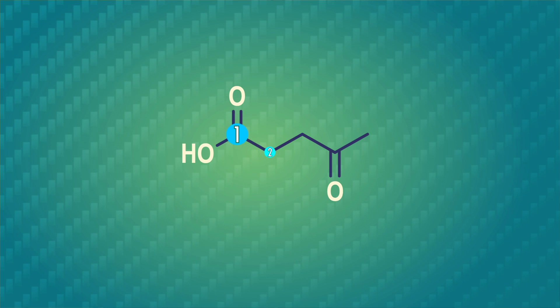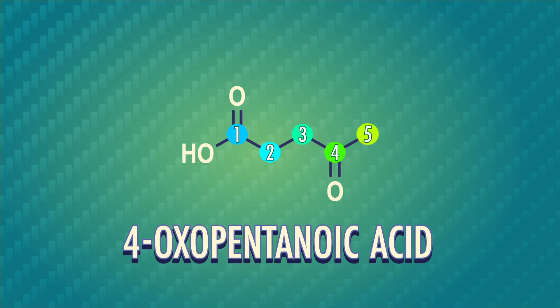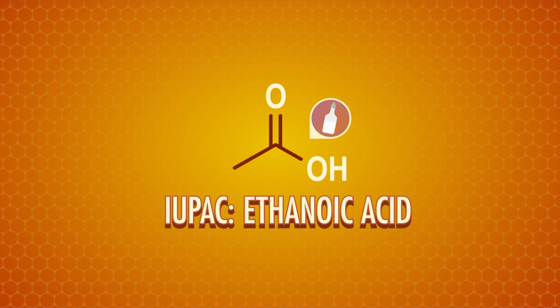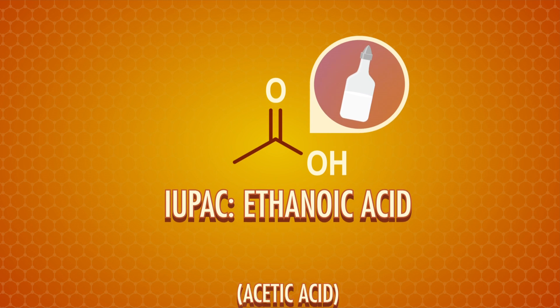When it comes to naming compounds, carboxylic acids have the highest priority among carbon-containing functional groups. So say we have a molecule containing both a ketone and a carboxylic acid group – the carboxylic acid forms the base name. We assign the carboxylic acid carbon the number one, and the ketone gets a prefix. An example of this is 4-oxopentanoic acid, also known as levulinic acid, a compound used as a starting point for the synthesis of some pharmaceuticals and industrial chemicals. This compound has a systematic IUPAC name and a common name, like how ethanoic acid – the acid in vinegar – has the common name acetic acid.